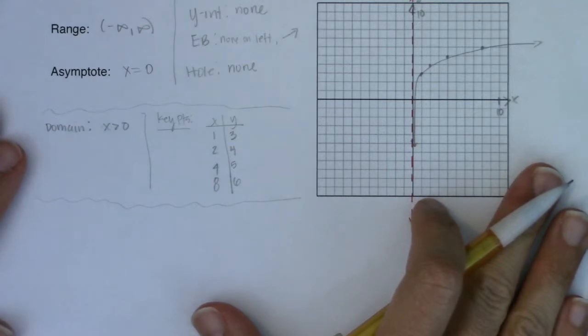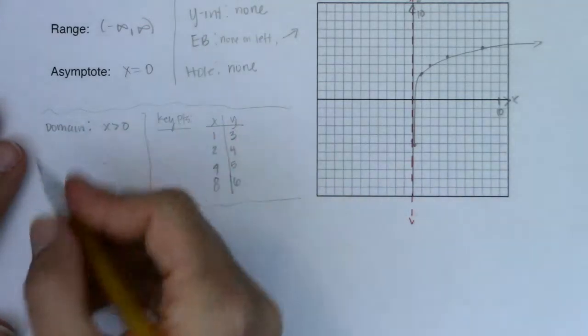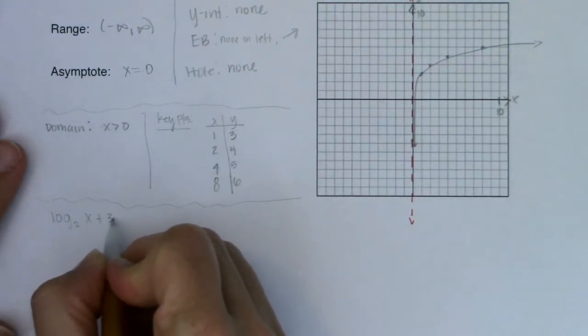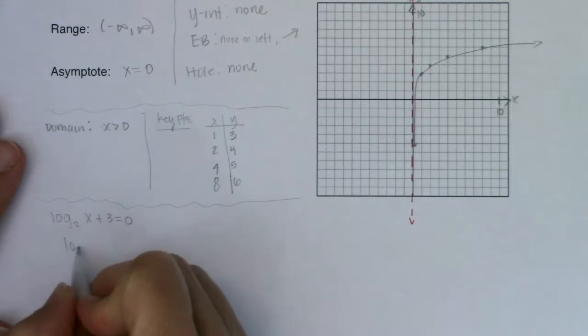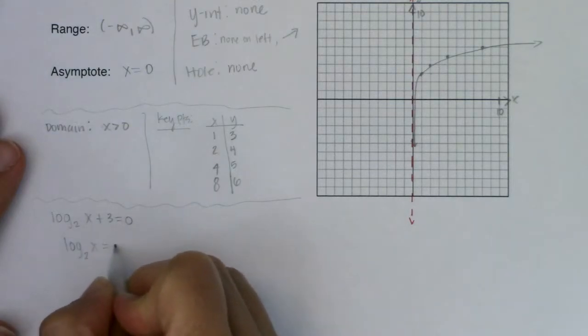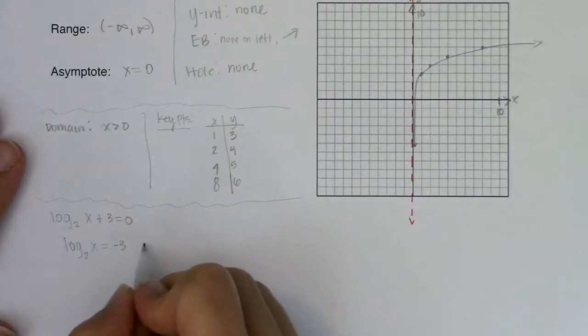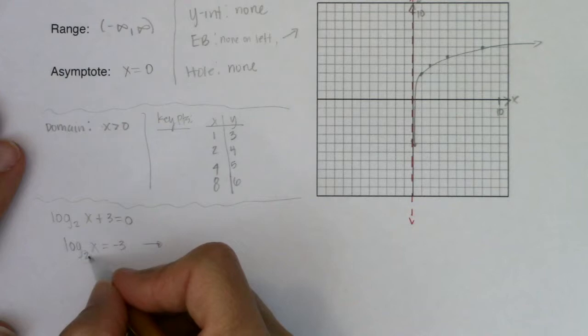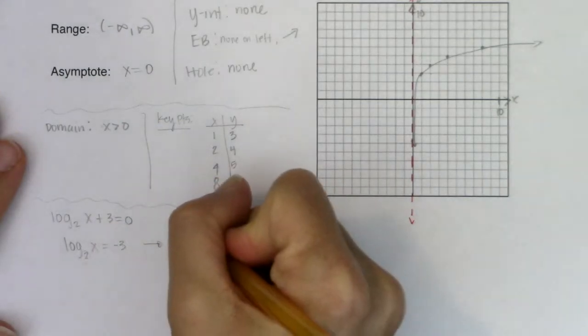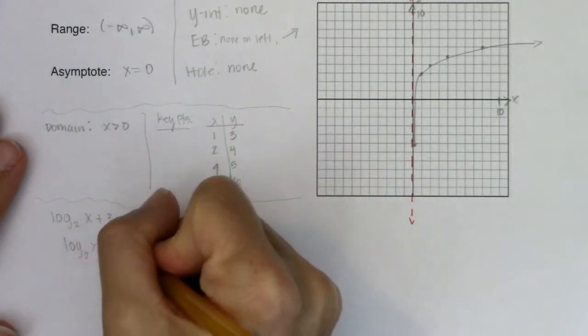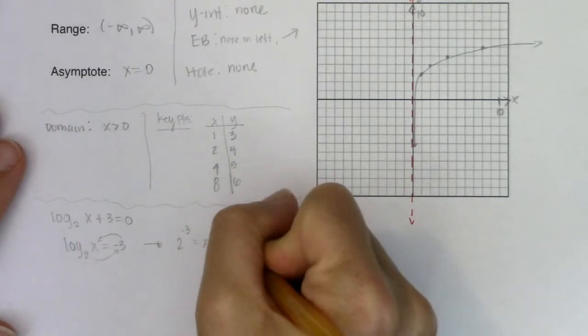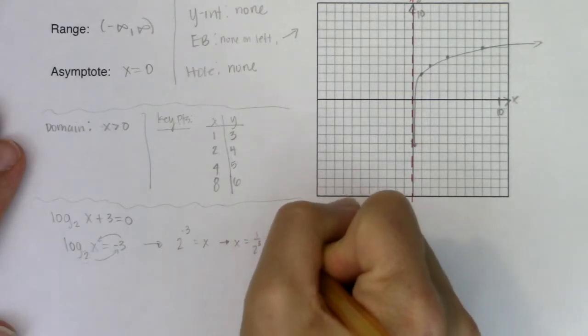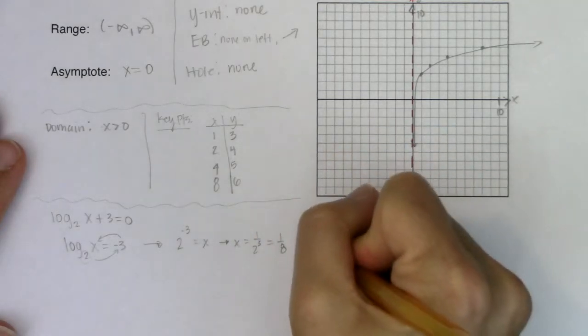For an x-intercept, you want to let y equal zero. So I want log base 2 of x plus 3 equal to zero, or log base 2 of x equal to negative 3. If I transfer this into its equivalent exponential form, I start with my base 2, the logarithm is the exponent—that's equal to x. That's like saying x equals 1 over 2 cubed, which is 1 over 8. So my x-intercept is (1/8, 0).